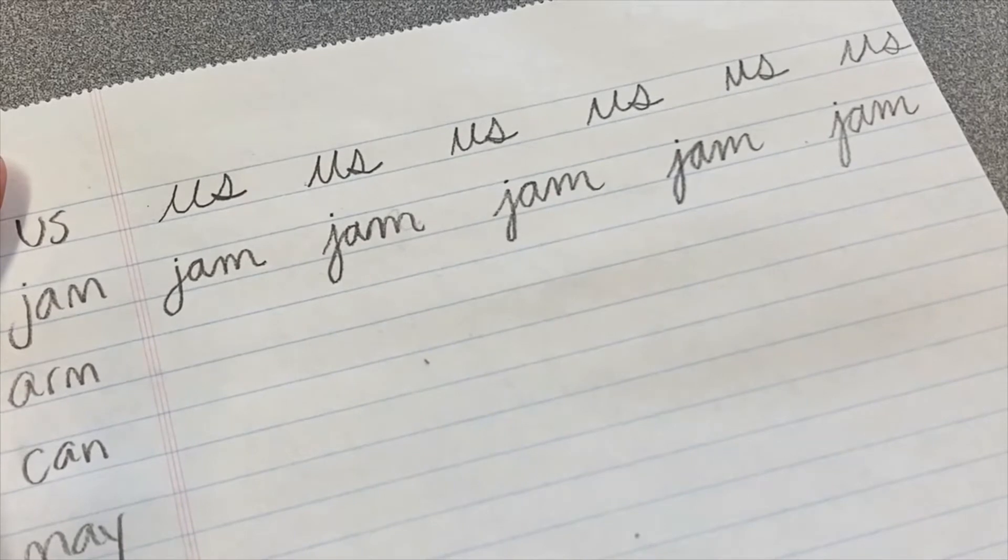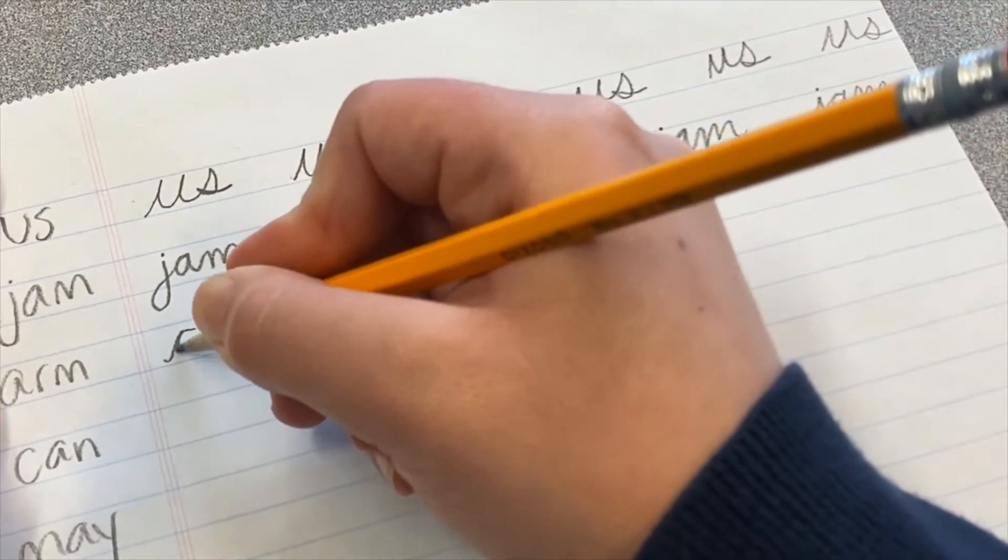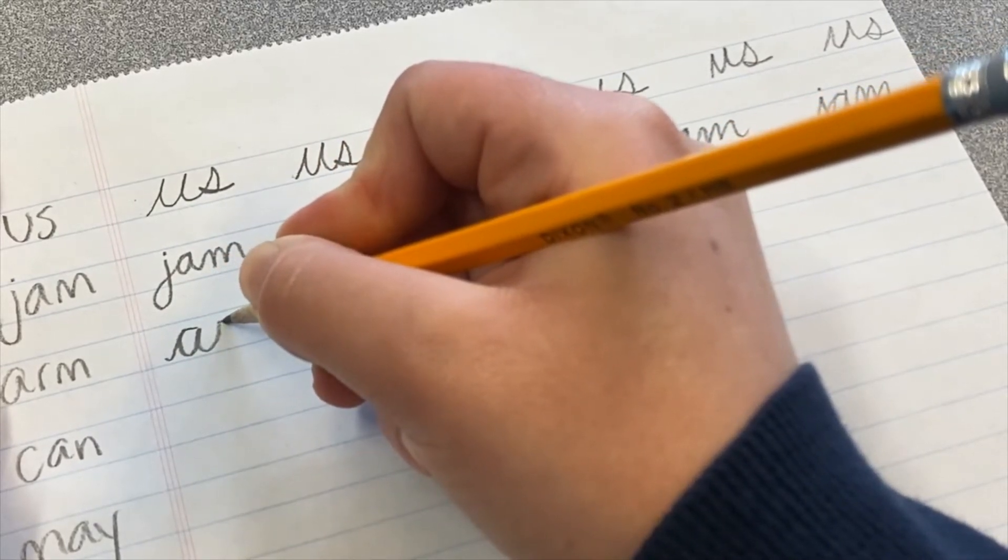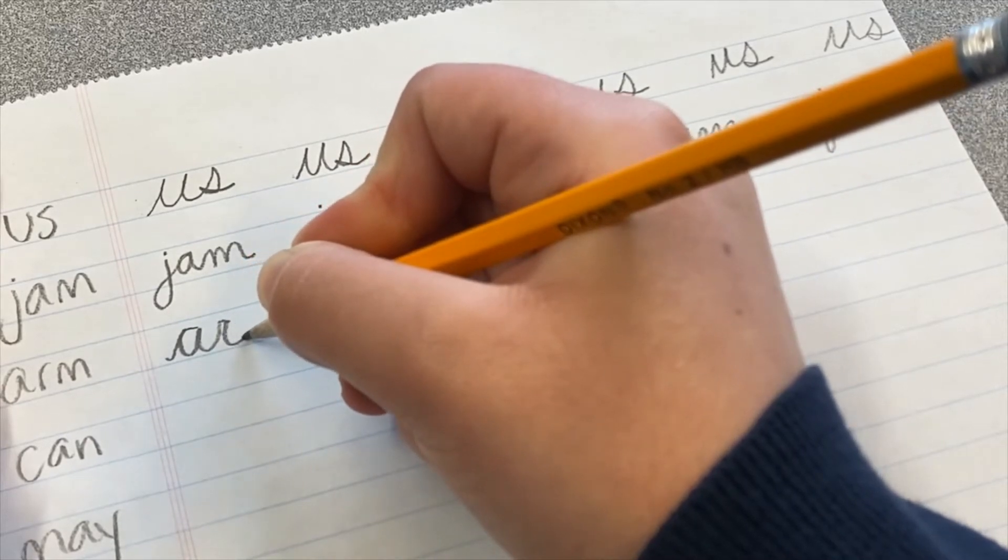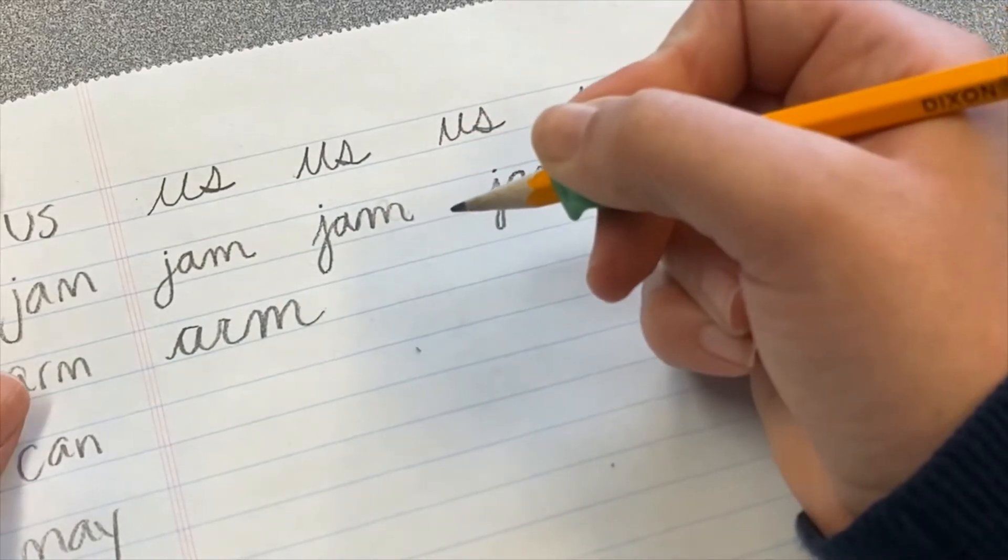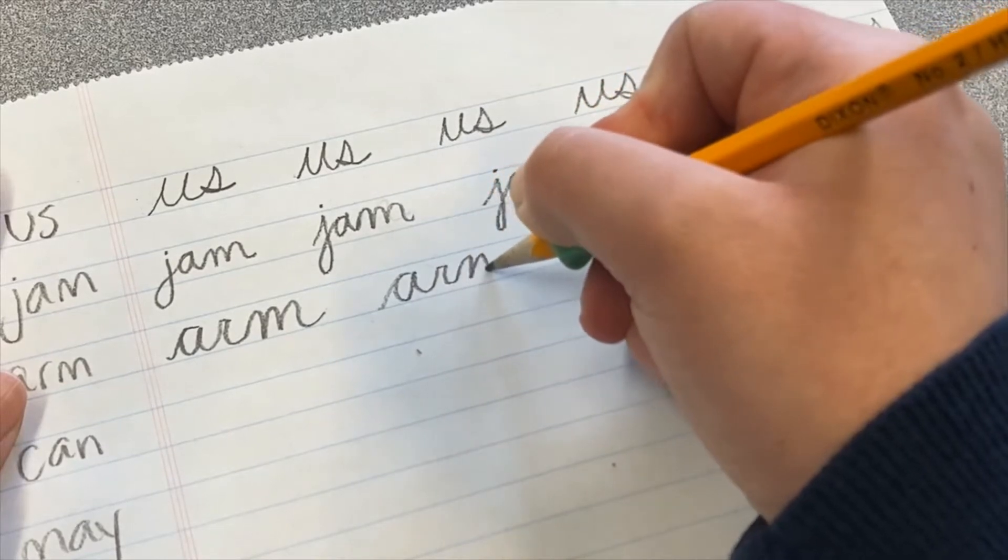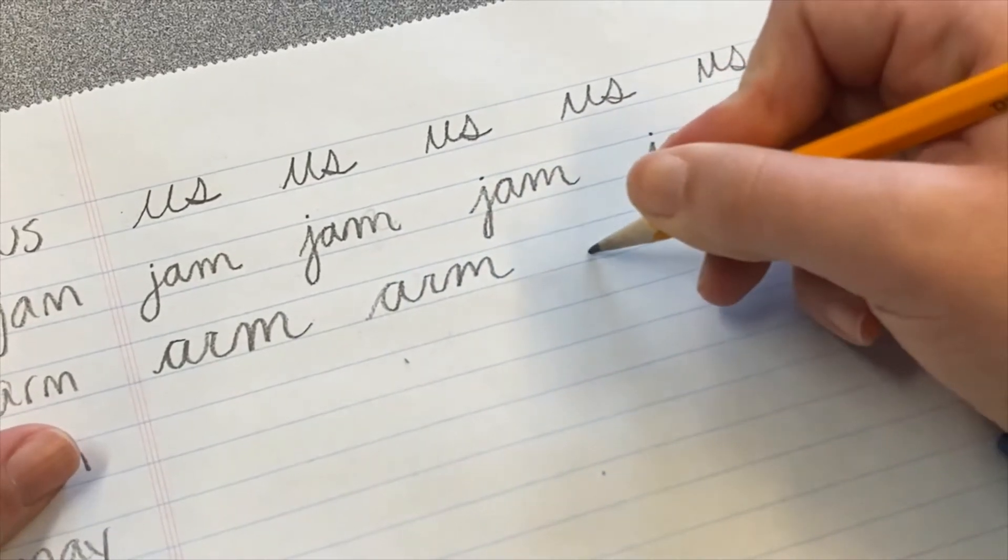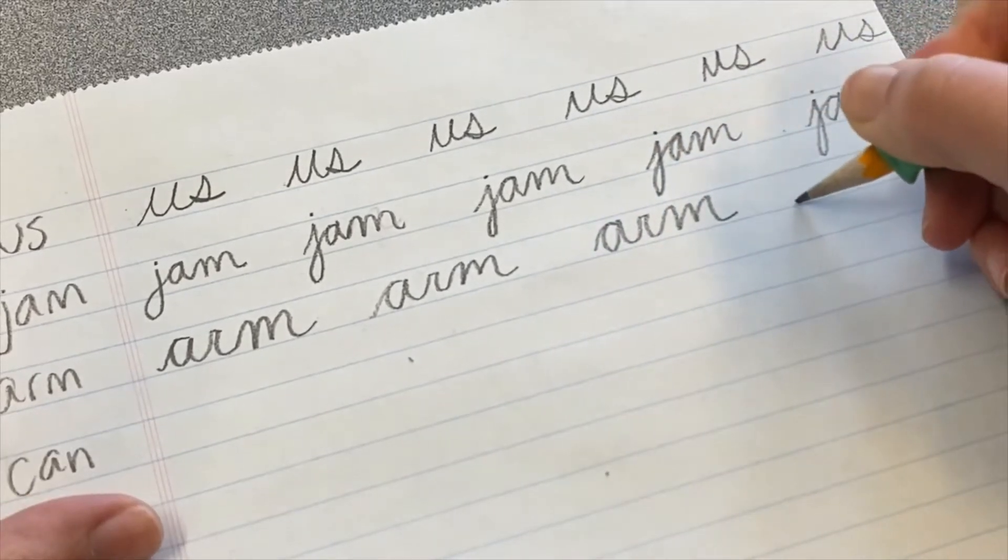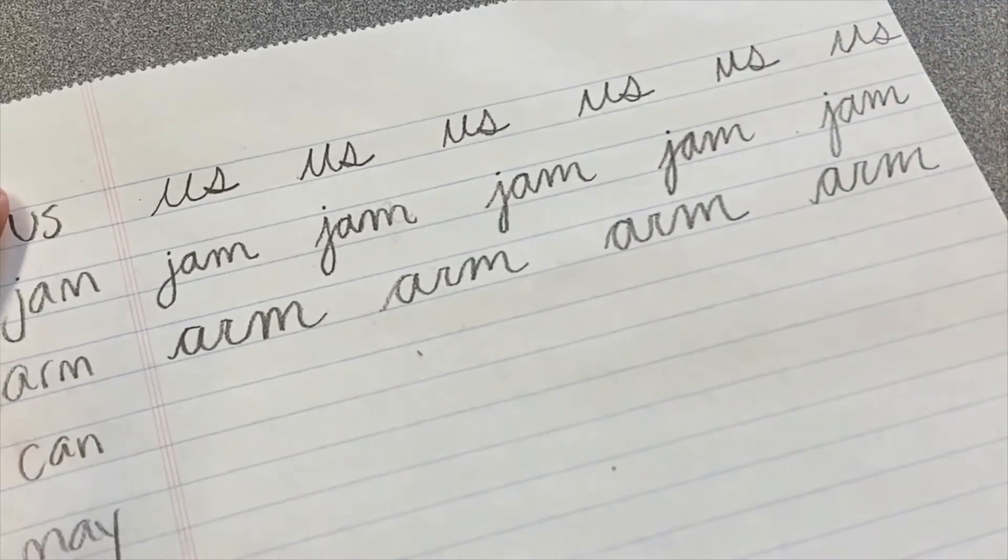Up next, we have the word arm. So we'll go right into the A. And remember the R. Up, a small diagonal line, down, and then we'll go right into the M. We've got the word arm. A-R-M.